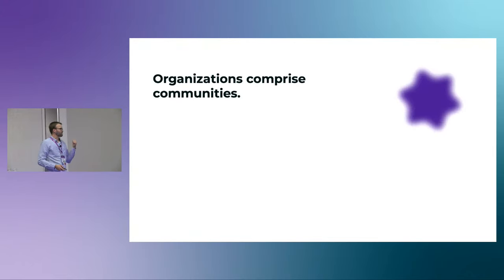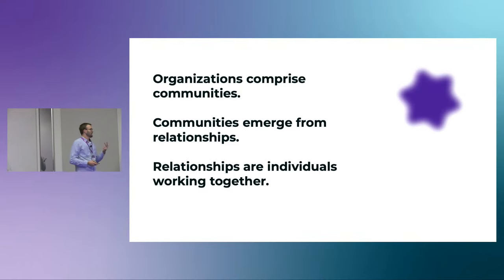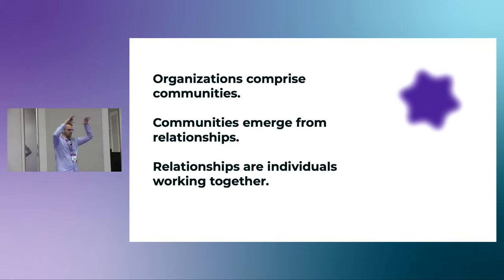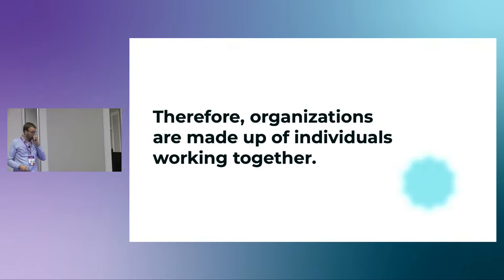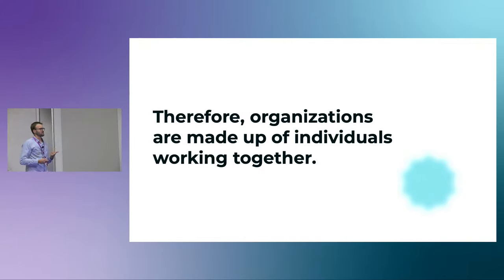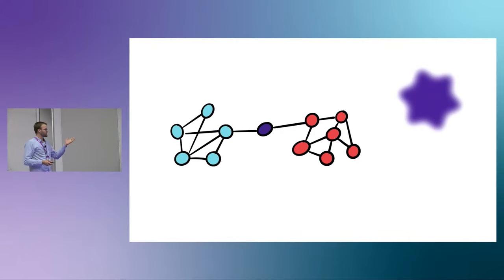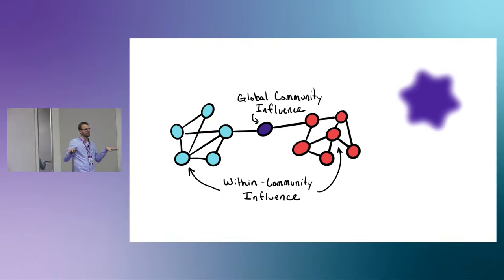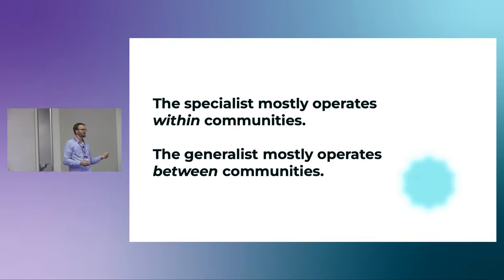What I took out of this experience was: first, every organization of people comprises smaller communities. These communities emerge from relationships, and these relationships are actually individuals working together — you can't disentangle the way people work together from the organization in the larger concept. So organizations are made of individuals working together. If you look at a set of people where each dot represents one person and each edge represents them working together, you can see two types of work: work within a community with influence within that smaller community, or work that goes between communities. The specialist mostly operates within communities, and the generalist operates between communities — that's the defining nature of generalist work.